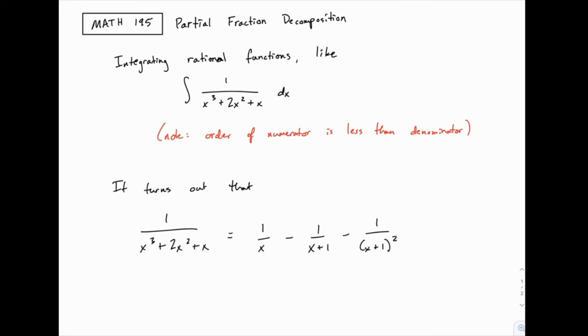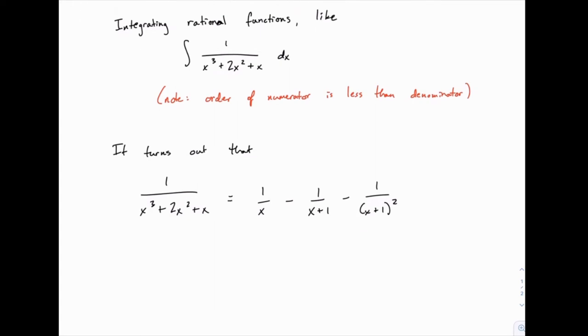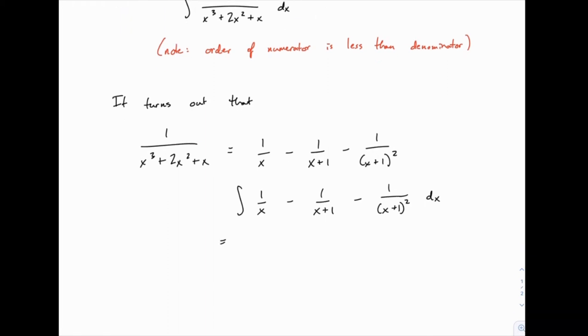Now if we could figure that out, if we could get from here to this partial fraction version, it turns out we can integrate those. If we try to integrate each of these pieces, we know how to do each of those. Some of them require a quick u substitution, but 1 over x is simply the natural log of x. 1 over x plus 1 needs a quick u substitution, but if you look back at your notes there, you should be able to do this one without really doing much work. That's the natural log of x plus 1.